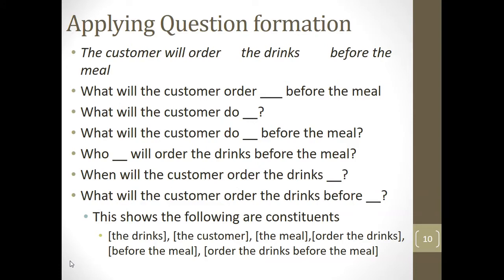Another test is question formation. We can ask open-ended WH questions about the scenario: 'What will the customer order before the meal?', 'What will the customer do?', 'Who will order the drinks before the meal?', 'When will the customer order the drinks?', etc. In each instance, two things are happening: a category is being substituted with a question word, and the question word is moving to the front of the sentence, leaving a gap. Taken together, this shows that 'the drinks,' 'the customer,' 'the meal,' and 'order the drinks before the meal' are constituents.